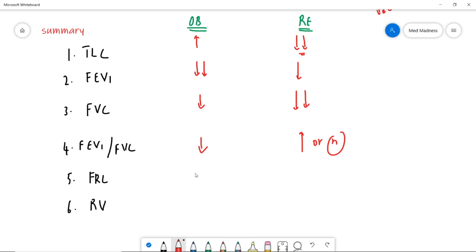FEV1 and FVC ratio is decreased and here it is increased or normal. The functional residual capacity is increased because of air trap and residual volume is also increased because of air trap and here both the volumes are decreased. I hope you get this concept very clear now. See you next video. Thank you.